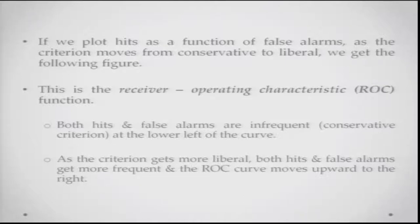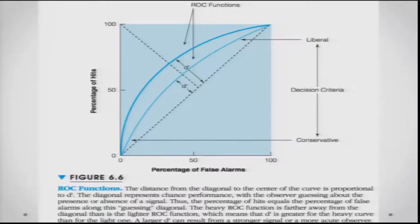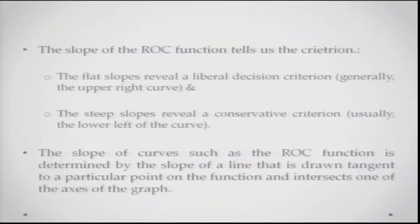If you plot a function of hits as a function of false alarms as the criterion moves from conservative to liberal, you get a particular figure. This figure is known as the receiver operating characteristic or the ROC curve. In this figure, both hits and false alarms are infrequent at the lower left of the curve, but both hits and false alarms become more and more frequent as you move towards the upper right side of the curve. This tells you about the decision-making process — whether you are following a conservative or a liberal process. The slope of this function will tell you two things: a flat slope indicates a liberal criterion, while a steeper slope reveals a conservative criterion with very few hits but also very few false alarms.